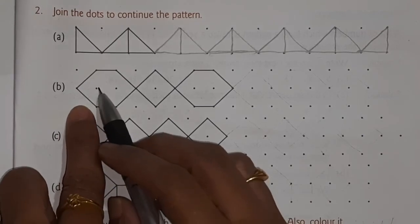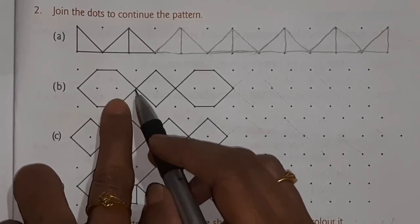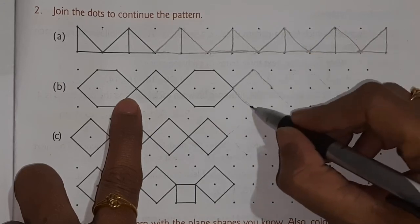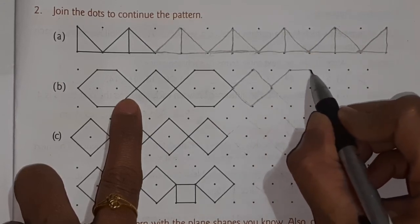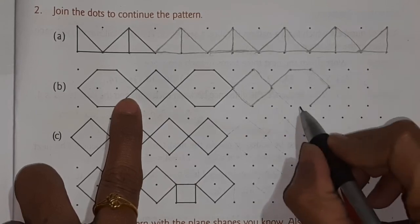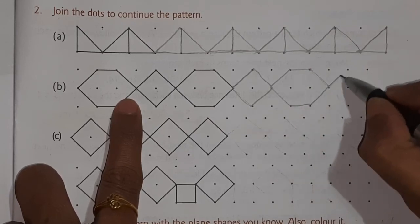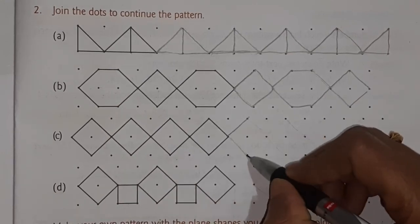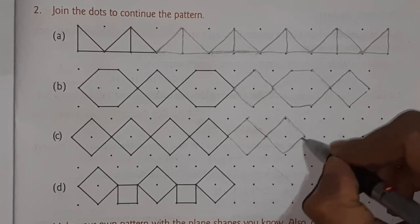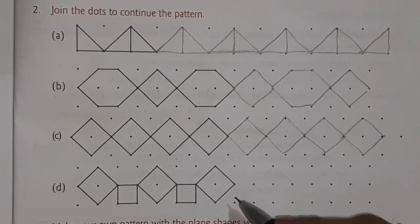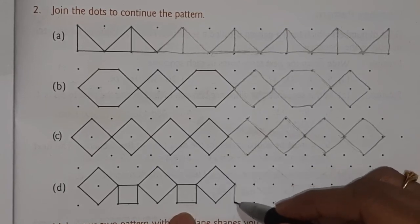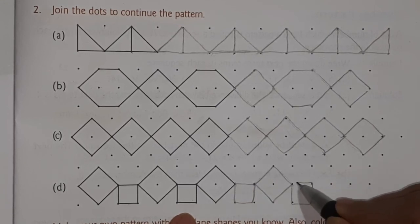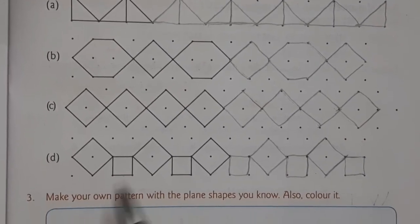Next one: two dots empty, one dot empty, middle one is engaged. So we draw a diamond shape, then a hexagon with six sides, then again a diamond shape. Same way, again you have to draw diamond shape and complete the pattern. Next: there is a diamond shape but the middle one has a square inside. So we are drawing square, then diamond shape, then square, then diamond shape — and complete the pattern. So here we have completed the pattern.